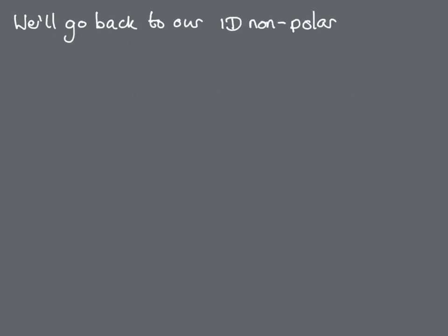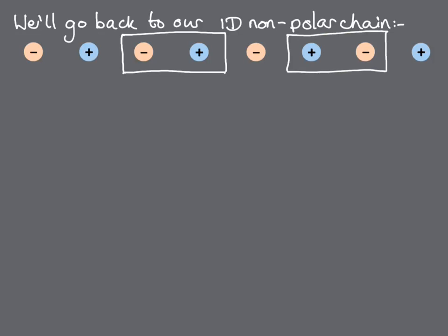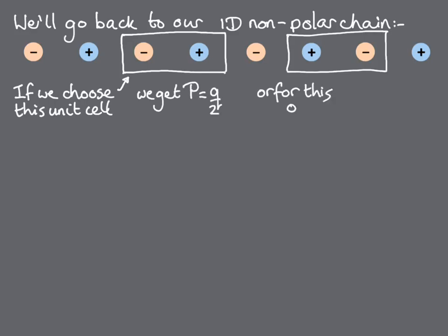Let's go back to our centrosymmetric one-dimensional chain and calculate the dipole moment per unit volume in the two unit cells shown, taking the left edge of the cell to be the zero of position in each case. For the left-hand unit cell, we get the value p is equal to q over 2, and for the right-hand cell, p equals minus q over 2.